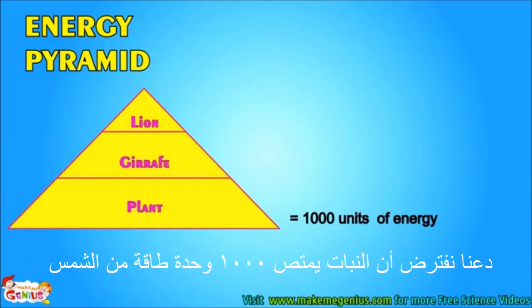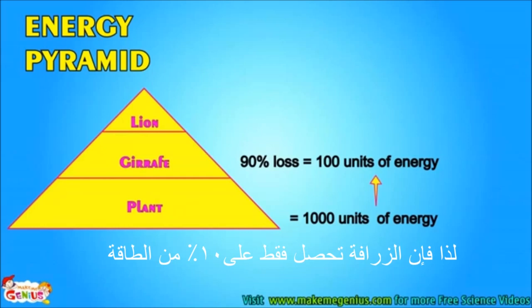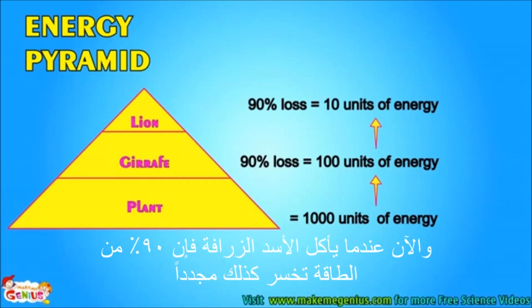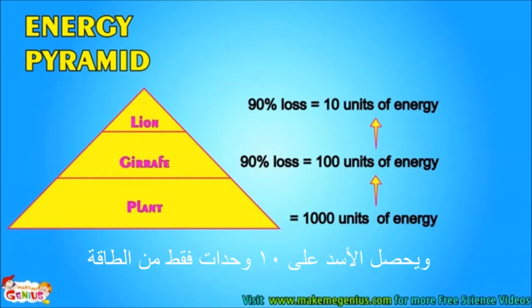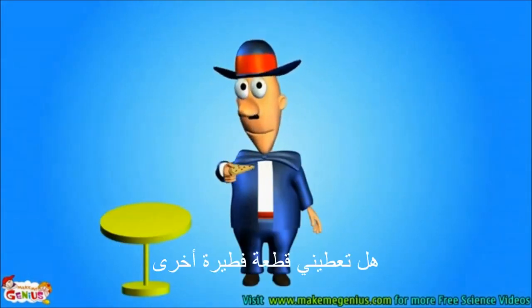Let's assume plants absorb 1,000 units of energy from the sun. When the giraffe eats the plant, 90 percent energy is lost, so the giraffe only gets 10 percent — that is 100 units. When the lion eats the giraffe, 90 percent energy is again lost and the lion gets only 10 units of energy.